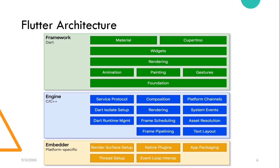A platform-specific embedder provides an entry point, coordinates with the underlying operating system for access to services like rendering surfaces, accessibility, and input, and manages the message event loop. The embedder is written in a language appropriate for the platform — currently Java and C++ for Android, Objective-C or Objective-C++ for iOS and macOS, and C++ for Windows and Linux.